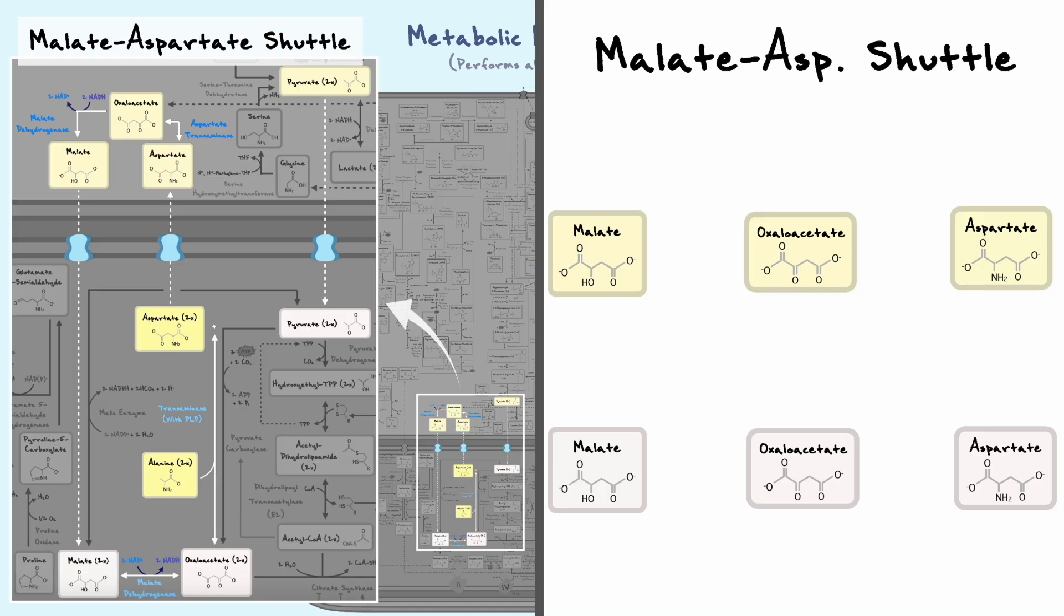Between these three substrates, only malate and aspartate are able to move between the cytosol and the mitochondrion as there are no transporters for oxaloacetate. Now, to reiterate the issue that we have at hand, the glucose that we have degraded via glycolysis has produced some NADH in the cytosol, but this NADH will only be useful for energy if it gets into the mitochondrion.